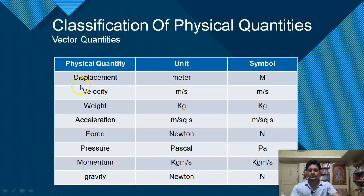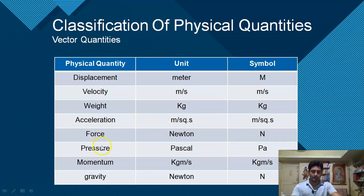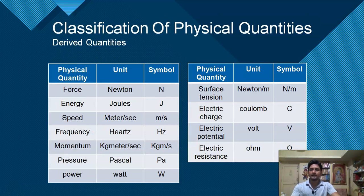Vector quantities include: displacement (meters), velocity (m/s), weight (newtons), acceleration (m/s²), force (Newton), pressure (Pascal), momentum (kg·m/s), and gravity (Newton). This covers the basic introduction of scalar, vector, fundamental, and derived quantities.